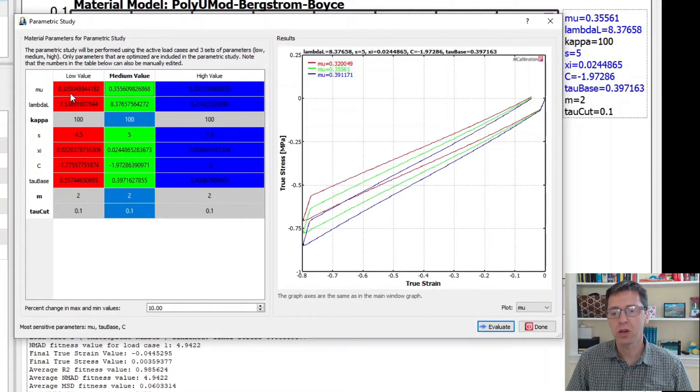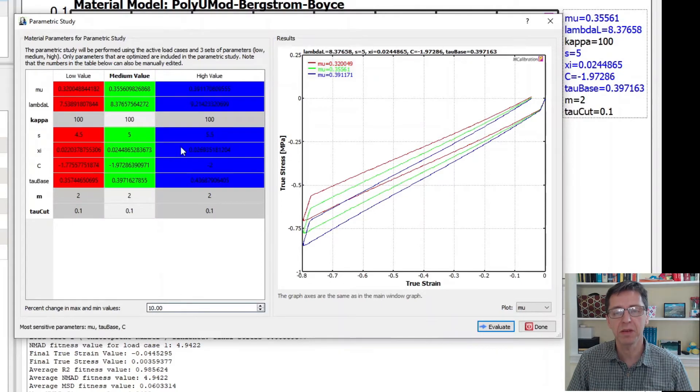Then it also compared the medium response with the lower value and a higher value, and the difference between the low and the medium is 10% because that's specified here, and the high value was 10% higher than the medium value.